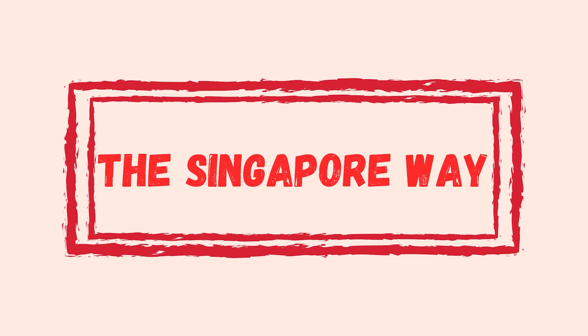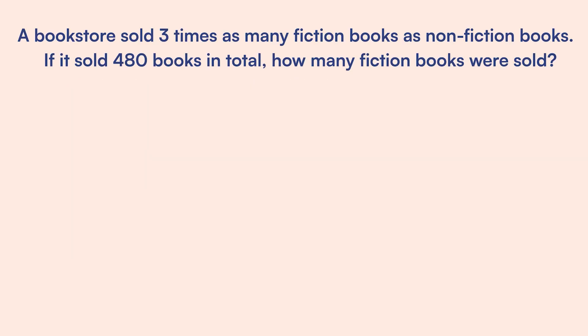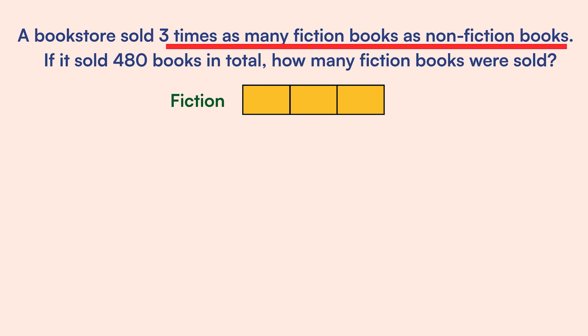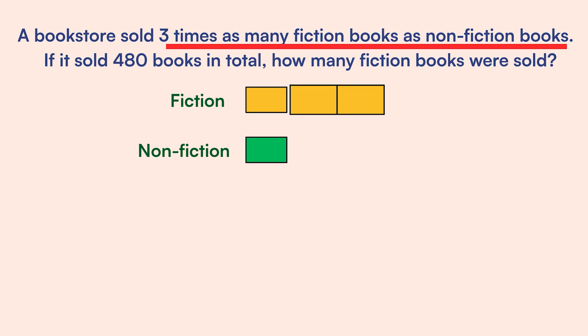I've seen many students get tripped up in the first step because they have a hard time figuring out which type of books to set as x. Here's the thing though — you don't actually have to use x to solve this problem. This is a routine math problem for third graders in Singapore. We are going to start by visualizing the first sentence. If a bookstore sold 3 times as many fiction books as non-fiction books, then we're going to use 3 bars to represent the number of fiction books and 1 bar to represent the number of non-fiction books.